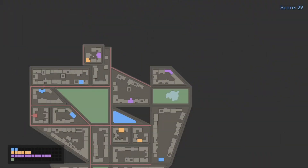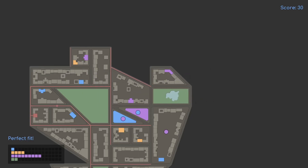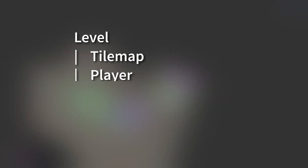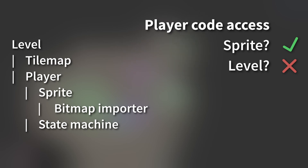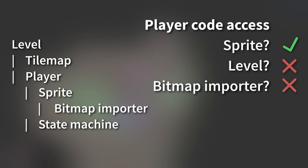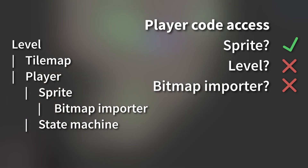Let's first discuss the foundational idea behind several of the tips we'll cover today: the application hierarchy. Every application, no matter how simple or complex, has some sort of a hierarchy, and this hierarchy needs to be respected. Dependencies should only flow down the hierarchy, never up or laterally. Additionally, we generally want to go down only one level for any dependencies. This keeps our code properly decoupled and makes it easy to use various objects around the application wherever we need them.